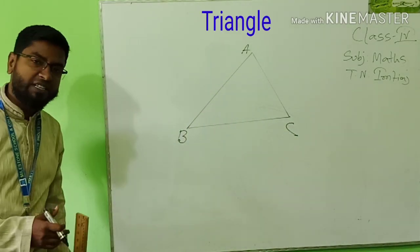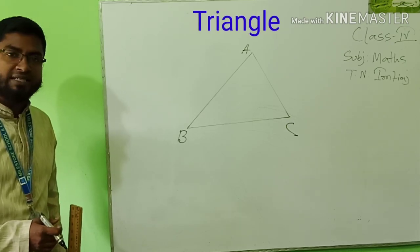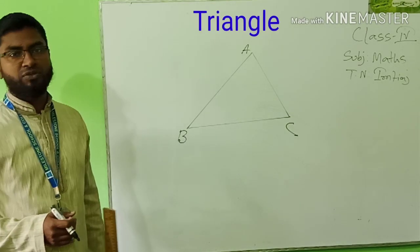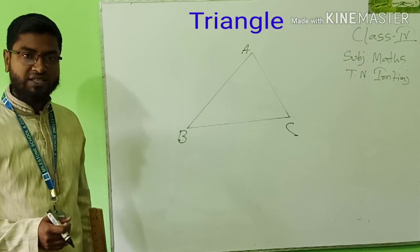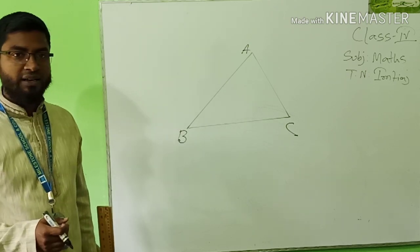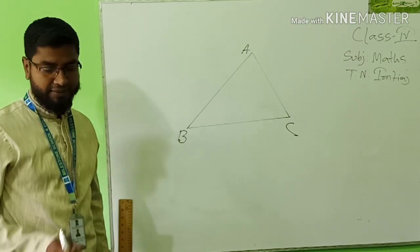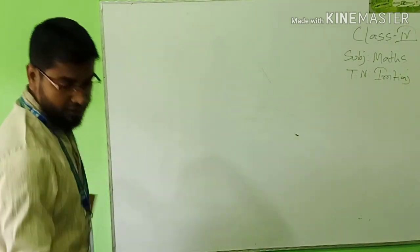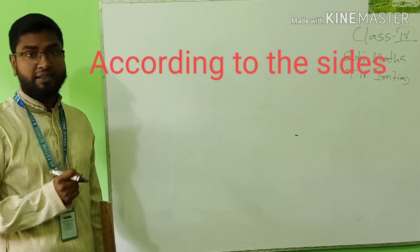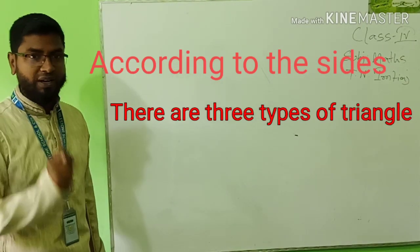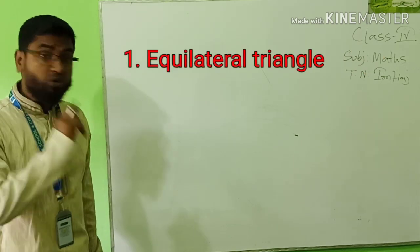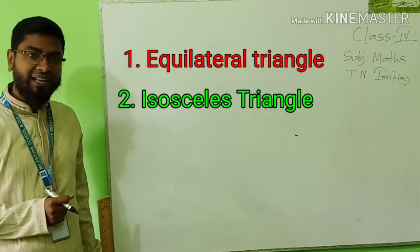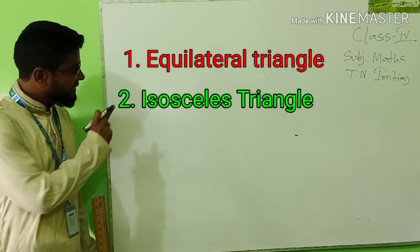The triangle shape can be different. For the shape, size, and different sizes of angles, there are different types of triangles. First, we will learn according to the side. According to the side, there are three types of triangles: one, equilateral triangle; two, isosceles triangle; three, scalene triangle.